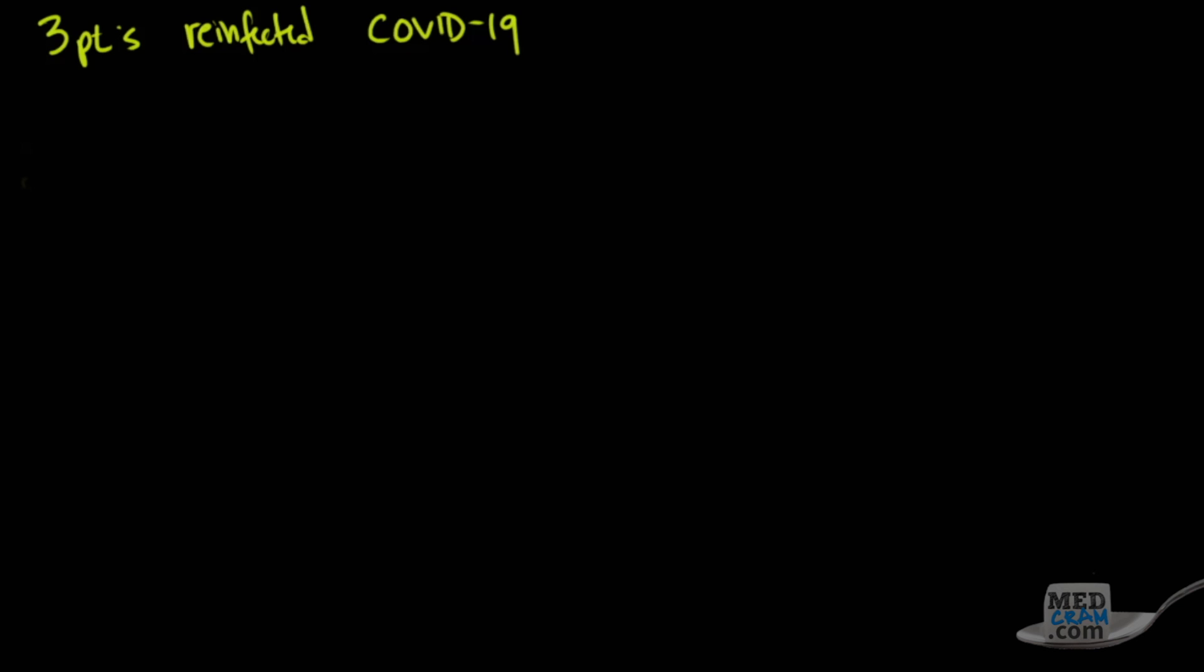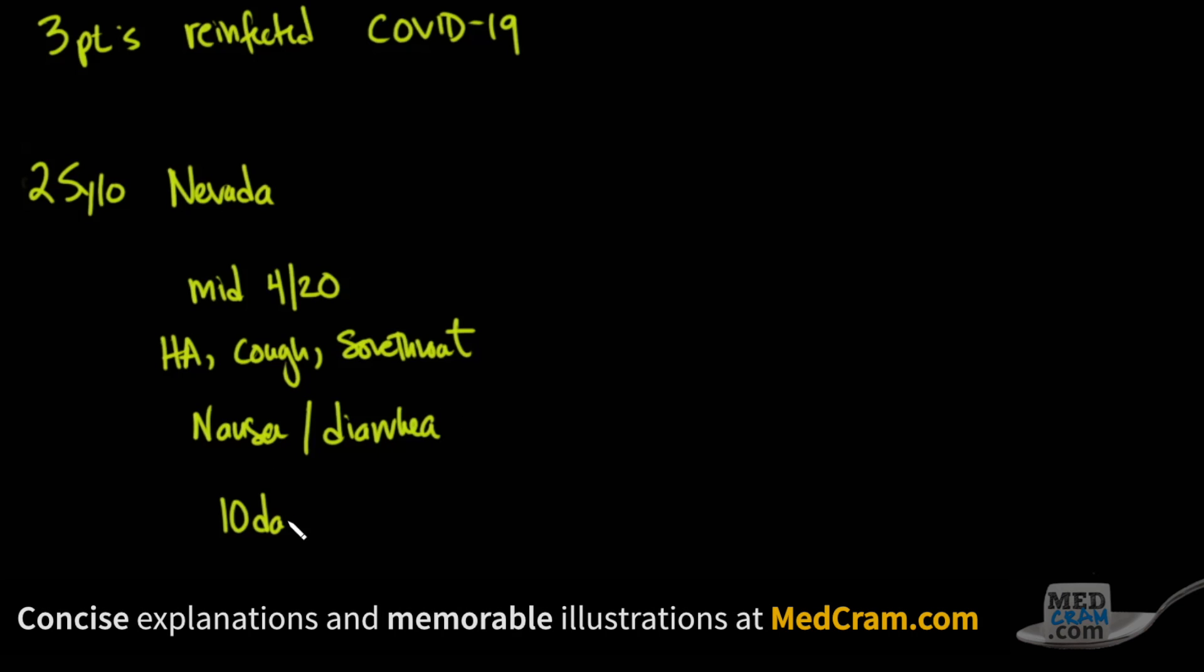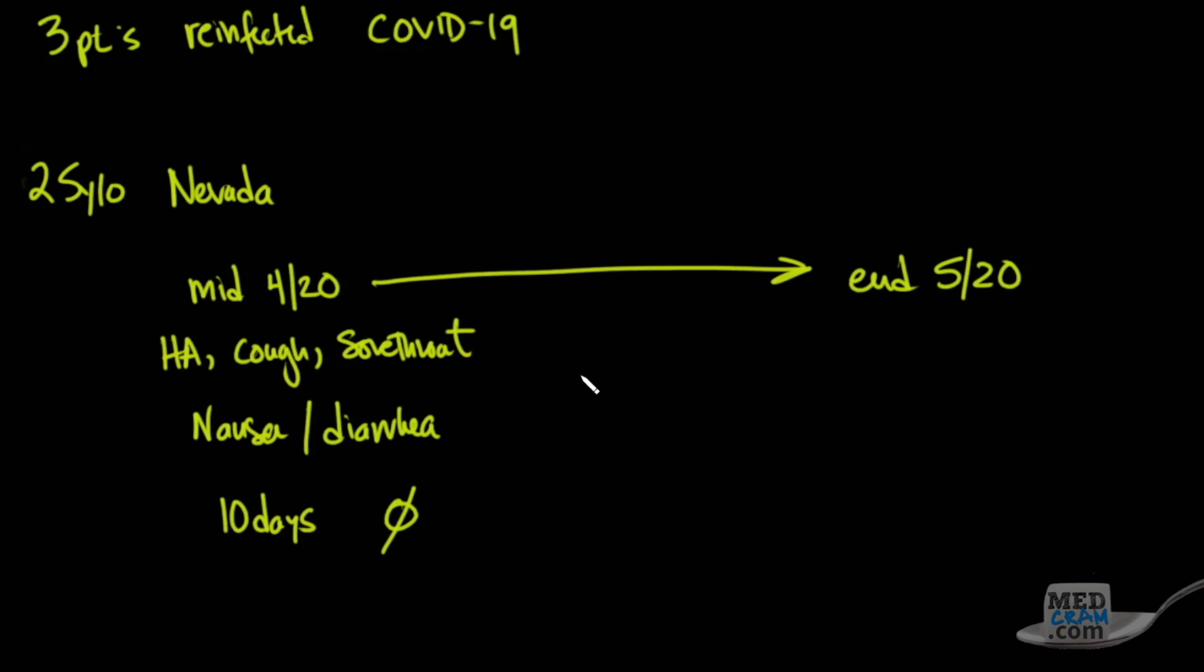We now report a 25-year-old from Nevada, the first American case of this. In mid-April, the patient came down with symptoms of headache, cough, sore throat, nausea, and diarrhea, but after about 10 days, his symptoms completely went away. Then at the end of May, after testing negative times two to the virus, the patient developed these symptoms: headache, fever, and again nausea and diarrhea.